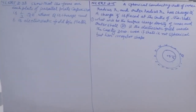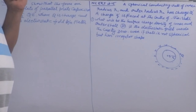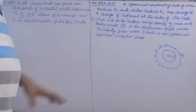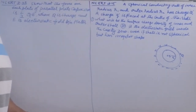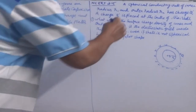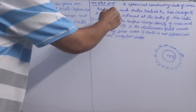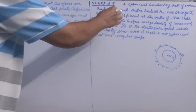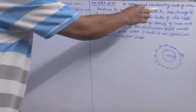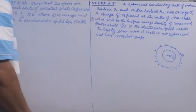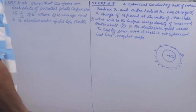NCERT numerical problem, question number 2.15: a spherical conducting shell of inner radius R1 and outer radius R2 has a charge Q.